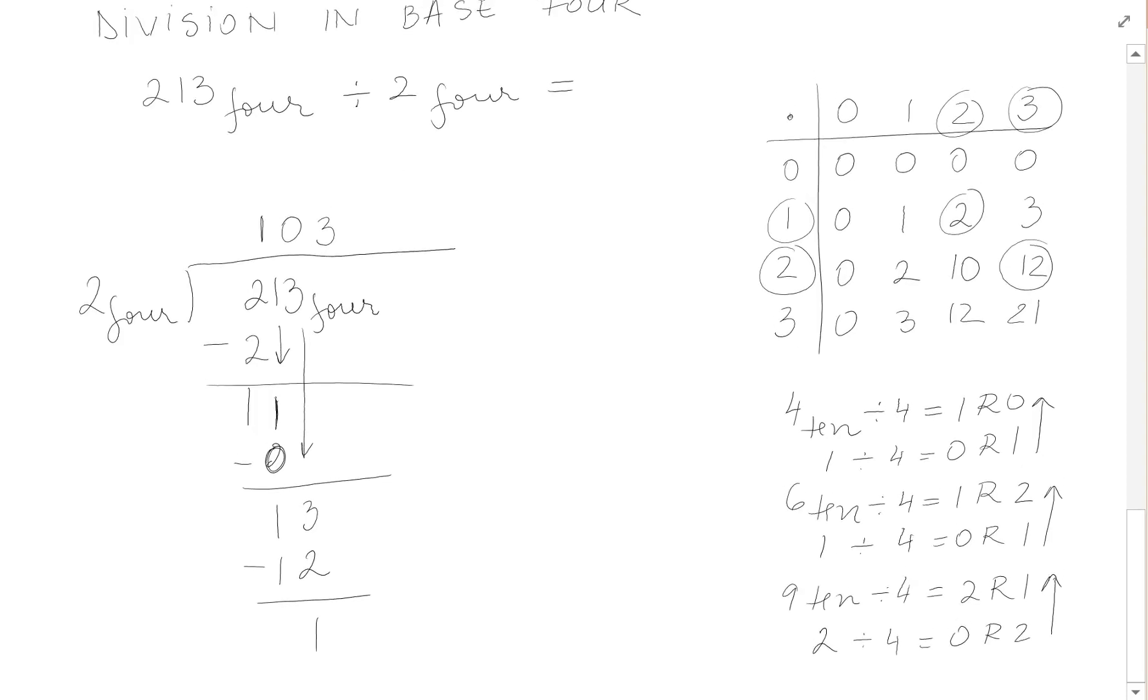So basically, 2, 1, 3 in base 4 divided by 2 in base 4, is 1, 0, 3 in base 4 remainder 1 in base 4.